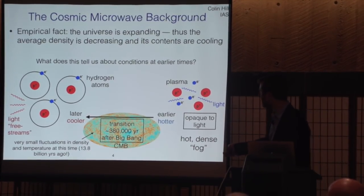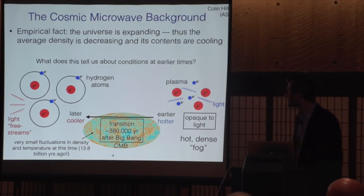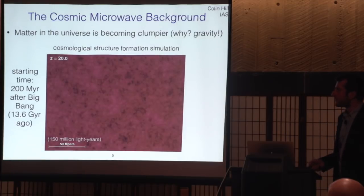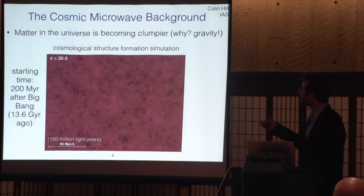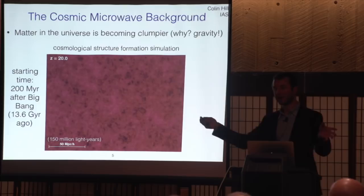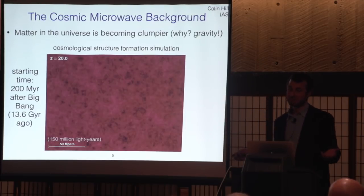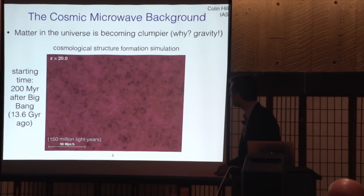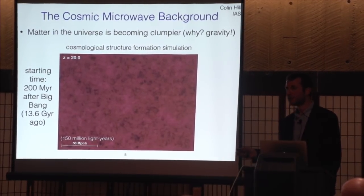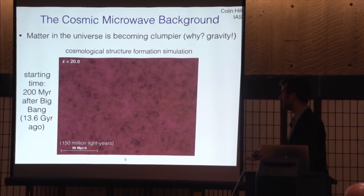What are we actually seeing in this map of the early universe? These colors represent very small fluctuations in the density of material and its temperature at that time. These fluctuations are so important because matter in the universe is becoming clumpier over time due to gravity — gravity pulls stuff together, which is why galaxies, stars, and planets form. This CMB map gives us a picture of what the initial conditions looked like for the formation of all the structure in the universe.